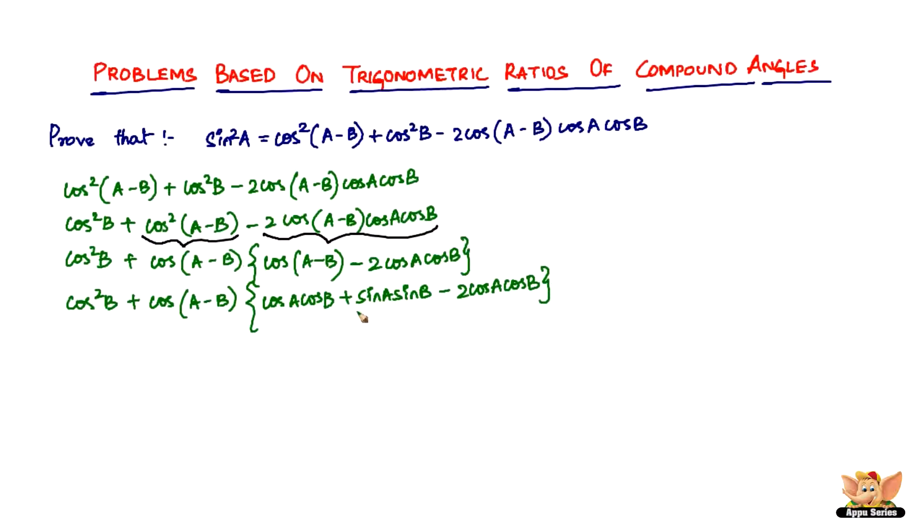So what this does is it kind of reduces. You see, there's -2cosAcosB and cosAcosB. One cosAcosB will just go, it gets subtracted.